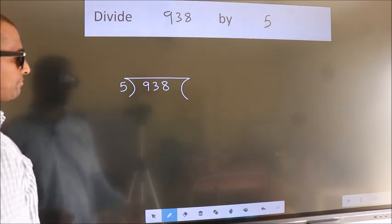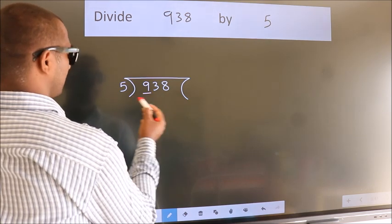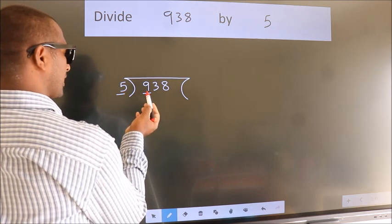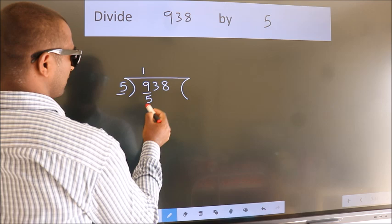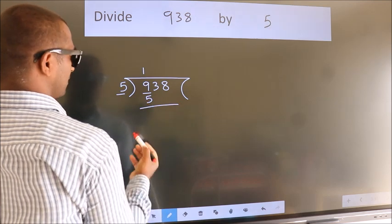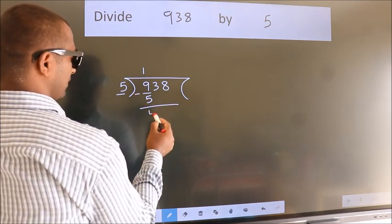Next. Here we have 9, here 5. A number close to 9 in the 5 table is 5 once, which is 5. Now, we should subtract. We get 4.